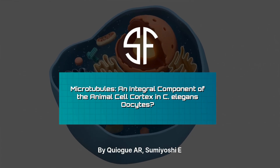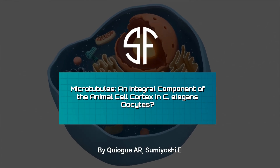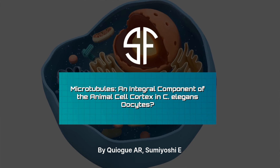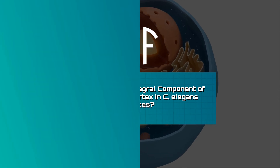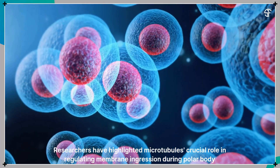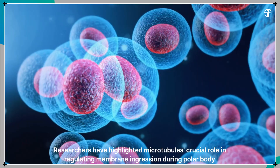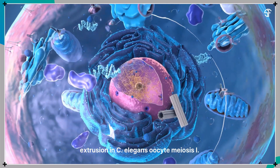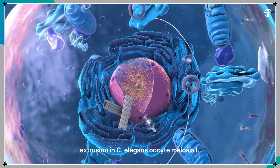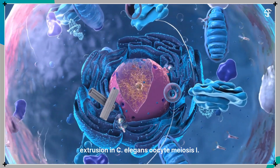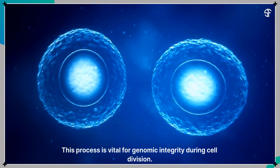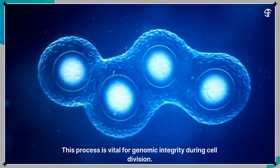Microtubules, an integral component of the animal cell cortex in C. elegans oocytes, have been highlighted for their crucial role in regulating membrane ingression during polar body extrusion in C. elegans oocyte meiosis I. This process is vital for genomic integrity during cell division.